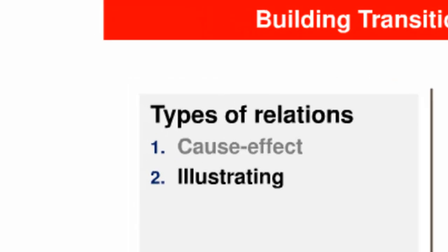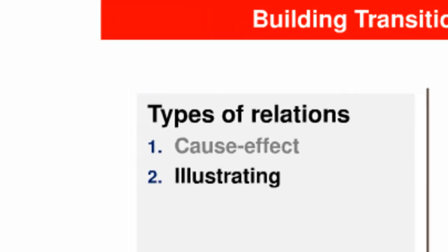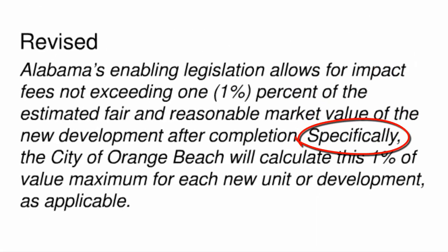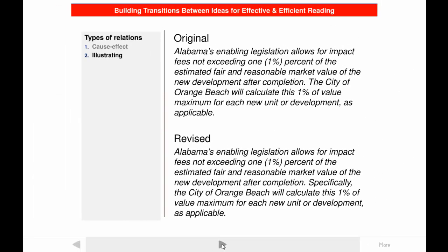The second type of relation that can be shown by transitions is illustrating. Look at another passage from the executive summary. The second sentence illustrates the meaning of the first, which means this would be more clear if a transition like "specifically" were used. If you find a relationship that's different from the one I'm talking about, that's perfect evidence of how important transitions are. With the transition, you know what the relationship is; without it, you and I might disagree.